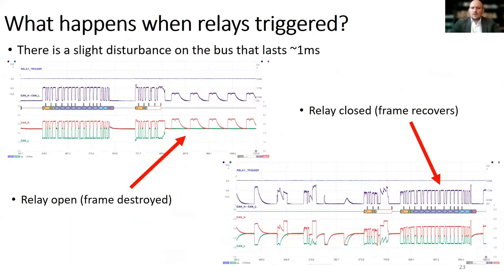There are three important questions regarding the effectiveness of Canary. The first is what happens with transmissions during the time when the relays are triggered. These relays have a 5-millisecond operation time, but the bus disturbances last about 1 millisecond based on our measurements. As you can see in this oscilloscope plot, the frame sent during the relay action will be destroyed and the sender will get a transmission error. But due to the clever design of CAN, it will retransmit the frame as soon as the bus regains its recessive level.